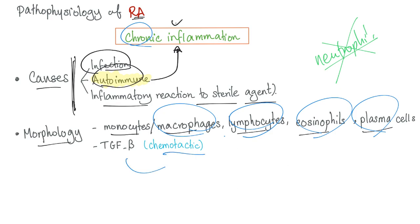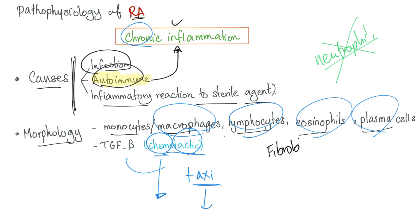What is the cause of ulnar deviation in rheumatoid arthritis? It's the erosion and subluxation — mainly the subluxation. Among cells involved in chronic inflammation, we have the nasty fibroblasts. Fibroblasts cause fibrosis, and fibrosis leads to sclerosis and subluxation.